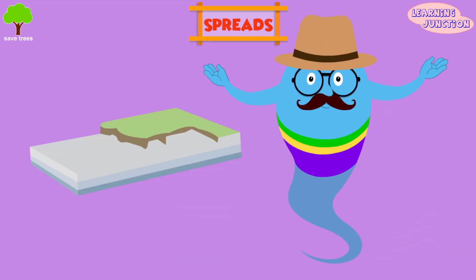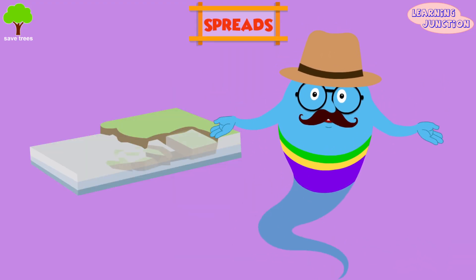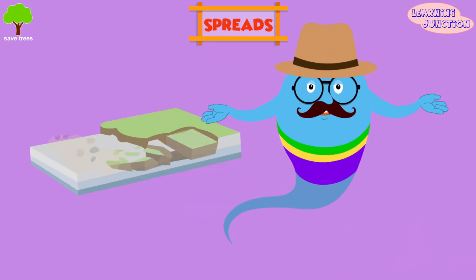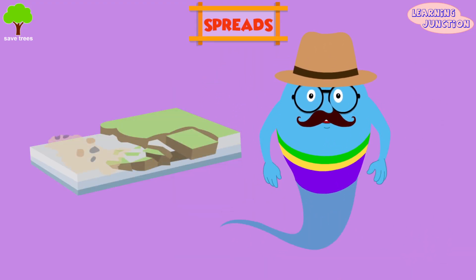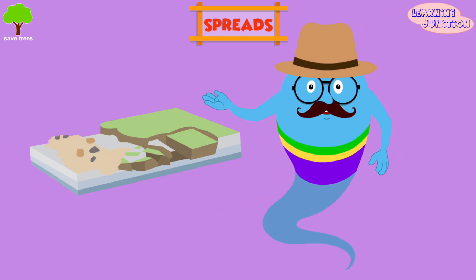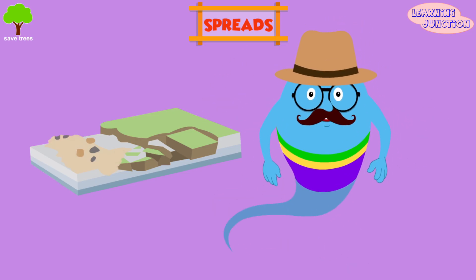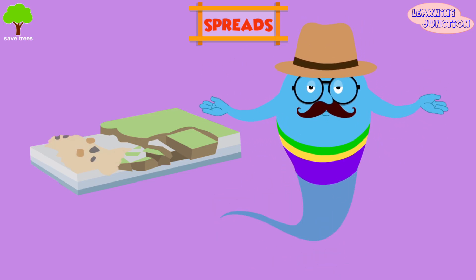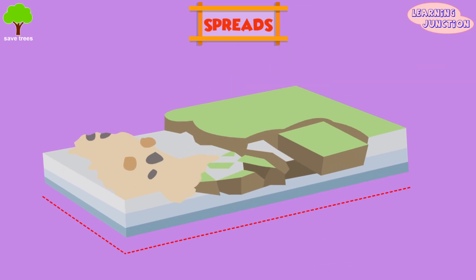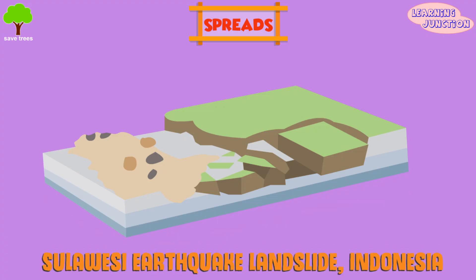Spreads: this phenomenon is characterized by the gradual horizontal displacement of large volumes of distributed material over flat or very gentle terrain. Example: the Sulawesi Earthquake Landslide in Indonesia.